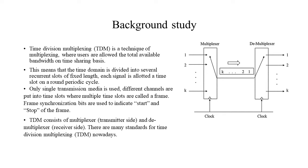Time Division Multiplexing consists of a multiplexer at the transmitter side and demultiplexer at the receiver side. There are many different standards for time division multiplexing.